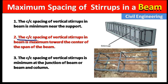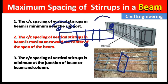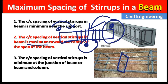Point two: the center-to-center spacing of vertical stirrups in a beam is maximum toward the center of the span. This is because when a load is applied on the beam, the shear force is minimum at the midpoint and maximum at the end points. Since stirrups are designed to prevent shear failure, we need more stirrups at the support and fewer at mid-span.